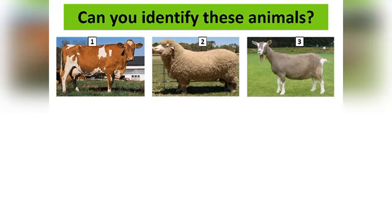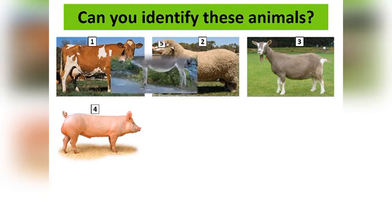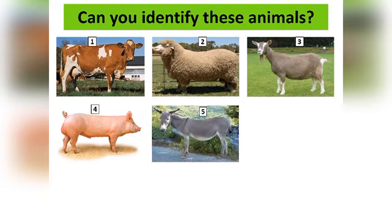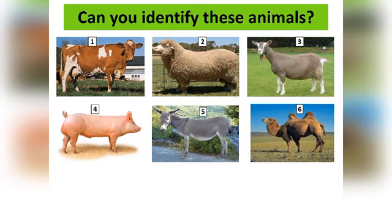Number four. What is that? It's a pig. This one is the Large White pig. Number five — that's a donkey. Number six — that's a camel. Which type of camel is that? Of course, it is the two-humped camel, which we call Bactrian. The Bactrian camel.